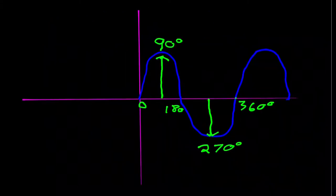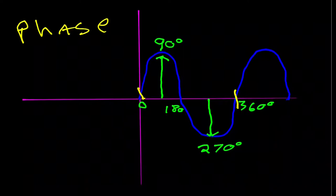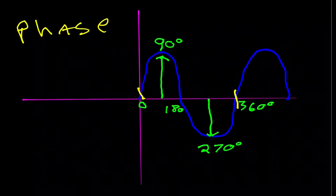The last property of waves we'll cover is phase angle. One full wavelength starts at zero degrees, goes to 90 degrees at a quarter wavelength, back down to 180 degrees at half a wavelength, then 270 degrees at three-quarters, and finally 360 degrees at the completion of a full wavelength.